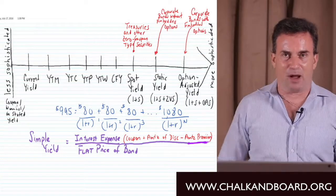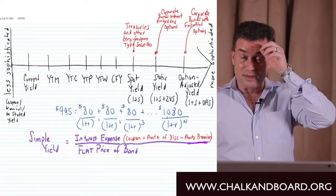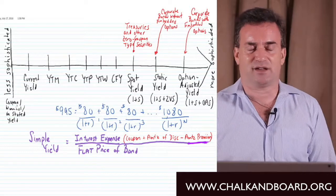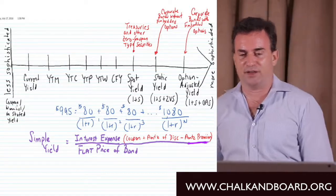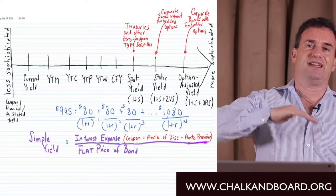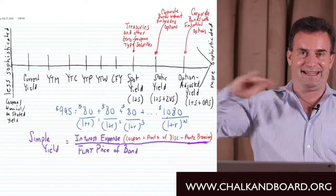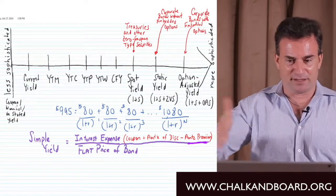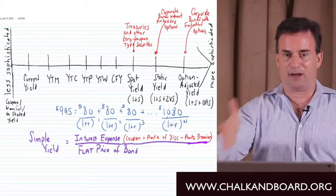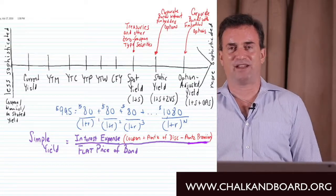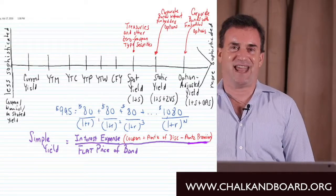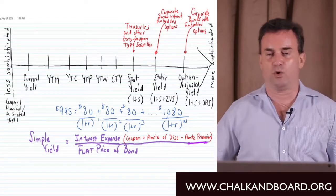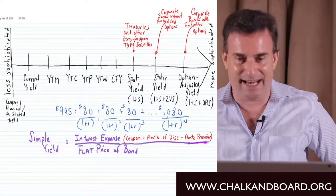I want to spend a couple of moments talking about this. The Z-spread, also known as the static spread or the zero volatility spread, creates what's called the static yield. So one plus each of the different spot rates — looking at those discount rates in the denominator — plus the same static spread, or zero volatility spread, creates what is called the static yield.